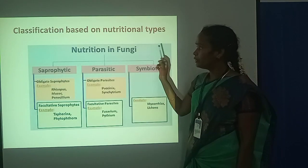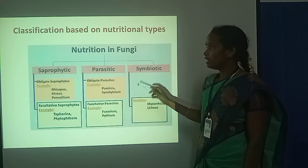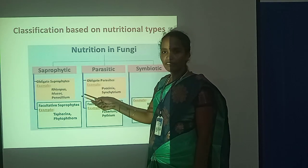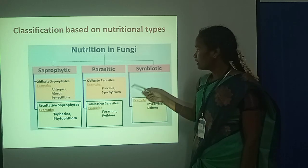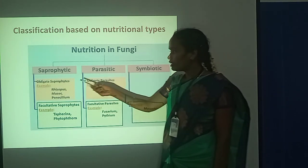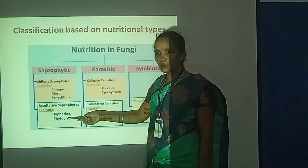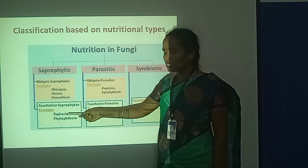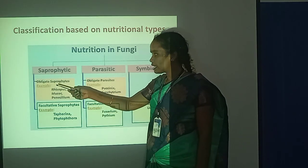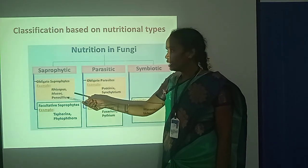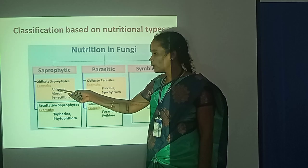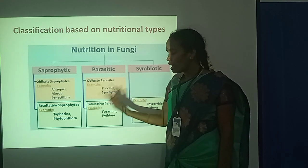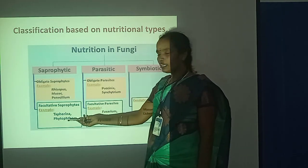Then you can see the nutritional types of fungi. Based on their nutrition, the fungi are three types: one is saprophytic fungi, parasitic fungi, and symbiotic fungi. In saprophytic fungi, it has been classified into two types: obligated saprophytes and facultative saprophytes. In obligated saprophytes, the fungi obtain food from dead and decaying organic matter. In facultative saprophytes, they take food from both living and non-living sources.